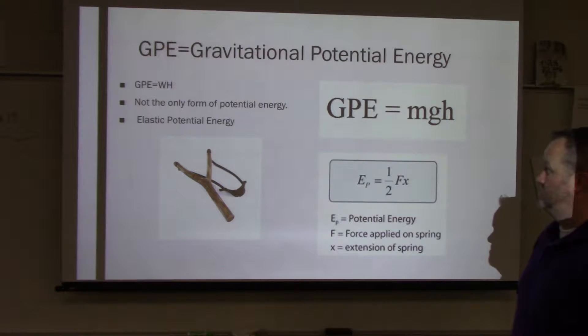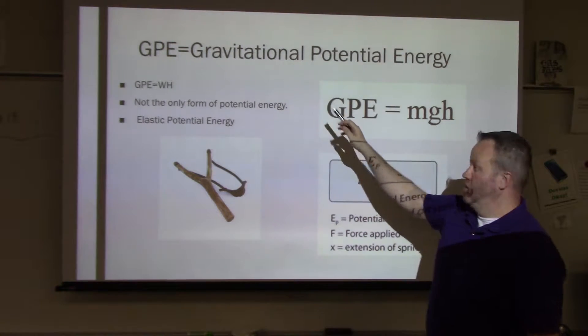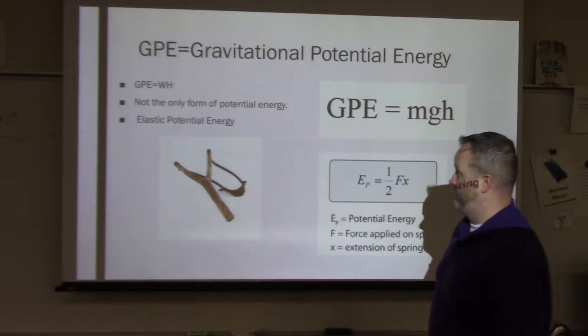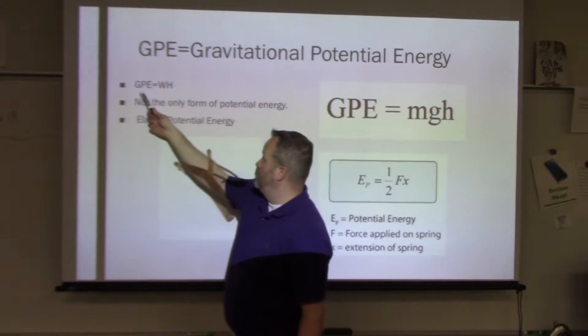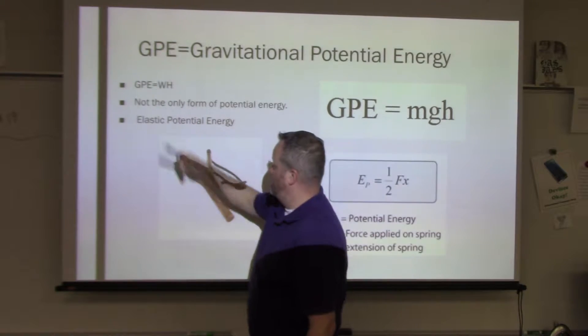So looking at some general information, GPE is the abbreviation for gravitational potential energy. The formula is GPE equals WH. W is weight, H is height.